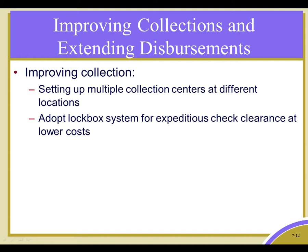One is to set up multiple collection centers in different locations. Imagine you're Allstate Insurance and you have activities all over the country. When customers pay their bills, rather than having all payments delivered to New York City, if a customer in Idaho pays his bill with a check, you'd want that money deposited quickly. So you'd have a collection center in the northwest, cutting a day or two off the time for the check to travel through the mail — from Idaho to Seattle instead of Idaho to New York. If it gets there a day earlier, the firm can deposit it a day earlier. When you're talking about millions of dollars, one day starts to be meaningful.